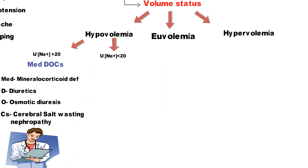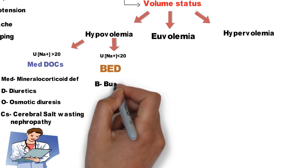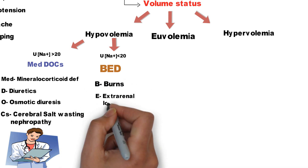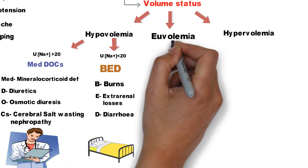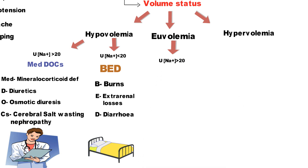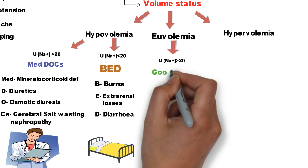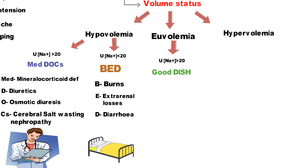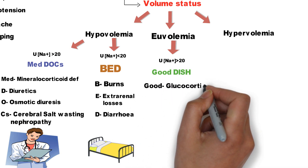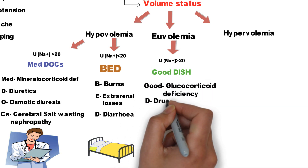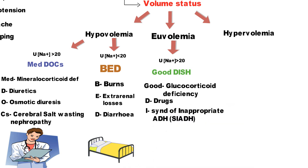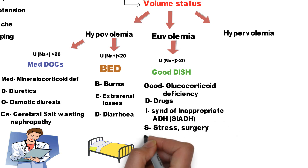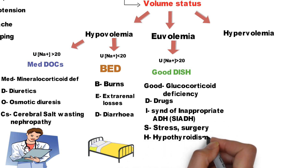If urinary sodium is less than 20 mEq/L, the mnemonic is BED: B for burns, E for extra-renal losses like vomiting, D for diarrhea. In euvolemia with urinary sodium more than 20 mEq/L, remember GOOD DISH: GOOD for glucocorticoid deficiency, D for drugs, I for SIADH (syndrome of inappropriate ADH), S for stress and post-surgery, H for hypothyroidism.